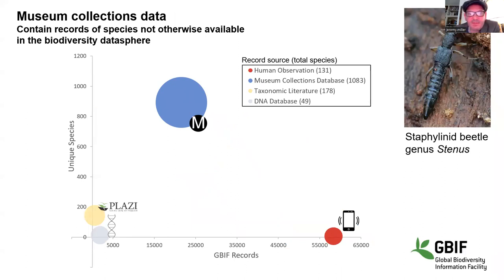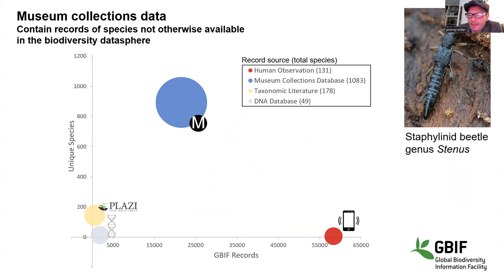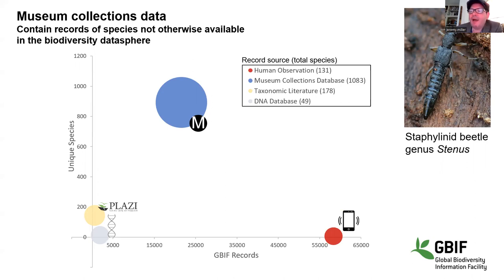This chart is built on data from GBIF on the genus Stenus, broken down by data source. Human observation records, like those contributed through Obs Identify, iNaturalist, and similar sites, provide a very large number of records of relatively few species. Museum collections databases contribute a modest number of records but include many more species — in particular, many species not represented by any other data source. The challenge is to find a way to leverage taxonomic knowledge and museum collections into a mechanism for more comprehensive and high-throughput biodiversity monitoring.